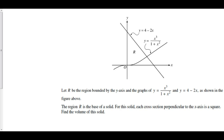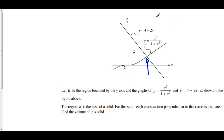Let R be the region bounded by the y-axis, the graphs of y equals x cubed over 1 plus x squared, and y equals 4 minus 2x. The region R is the base of a solid, and each cross-section perpendicular to the x-axis is a square. Find the volume of this solid. We're taking the integral from the y-axis, which is x equals 0, since our cross-sections are perpendicular to the x-axis, up until the point of intersection. First, we have to find that point of intersection by setting our two functions equal to each other.